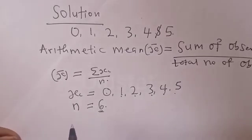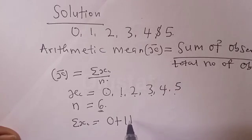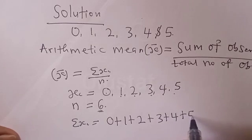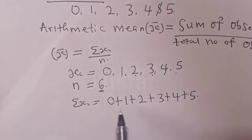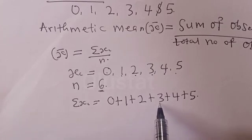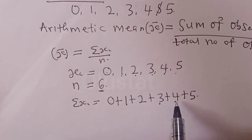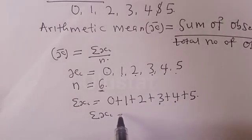Therefore, the summation of x-i gives us 0 + 1 + 2 + 3 + 4 + 5. This implies that 0 + 1 = 1, 1 + 2 = 3, 3 + 3 = 6, 6 + 4 = 10, 10 + 5 = 15. So summation of x-i is equal to 15.